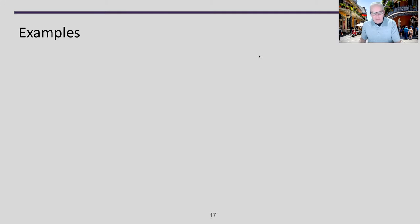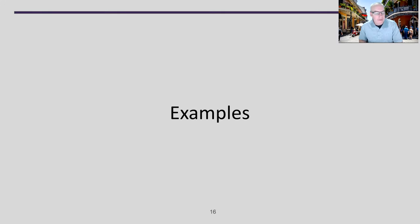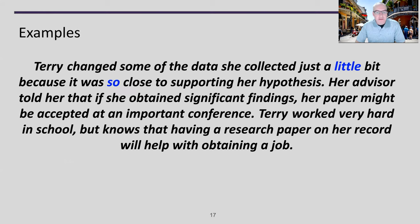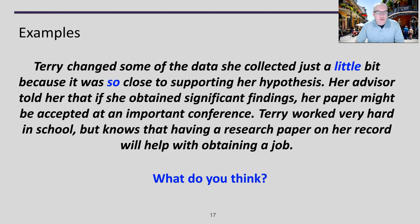With that, I'll finish the main lecture. At the end, I have a few examples to think through. You can pause the video on any of them, and we can discuss further in our next session. The first example: Terry changed some of the data she collected just a little bit because it was so close to supporting her hypothesis. Her advisor told her that significant findings might get her paper accepted at an important conference, and Terry knows a paper like this will help with obtaining a job. Is this ethical or not? What are the problems, and how should it be done differently?